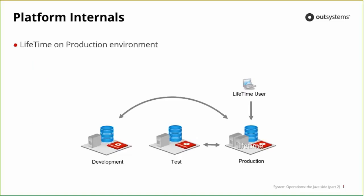If you have Lifetime on production, your developers need to connect to production to create deployment plans, and test and production communicate with each other. This can be a problem — if you restore a production database to test and forget something, that database has IP addresses and web service endpoints pointing to production, and since the communication is possible, you can actually affect production. So what we suggest is to have Lifetime on a separate environment, so development doesn't connect to test, test doesn't connect to production, and production doesn't communicate with development.